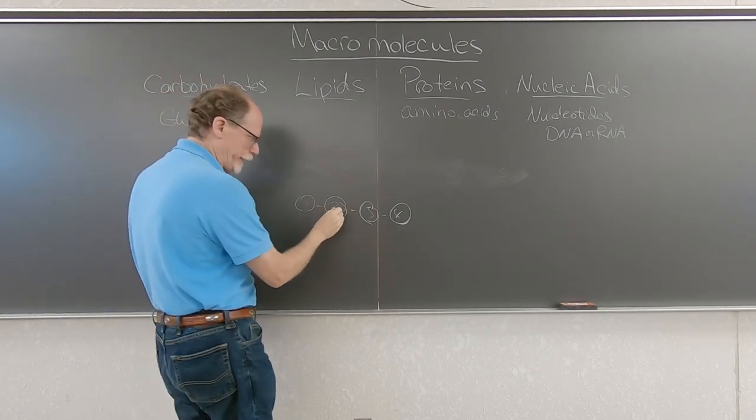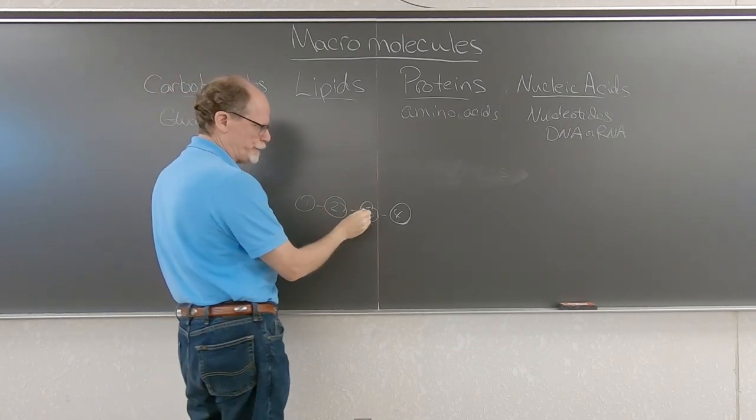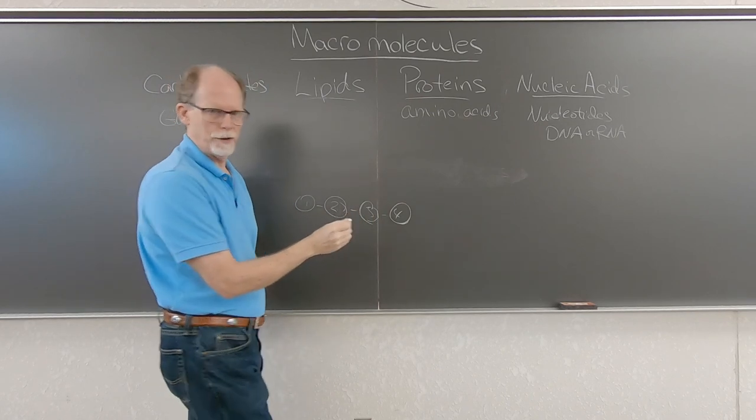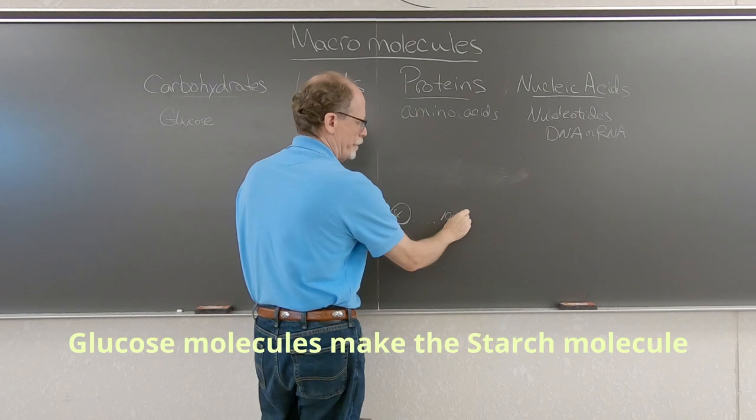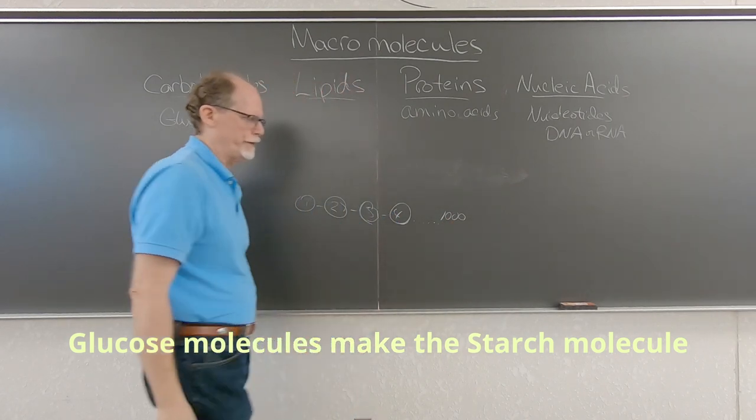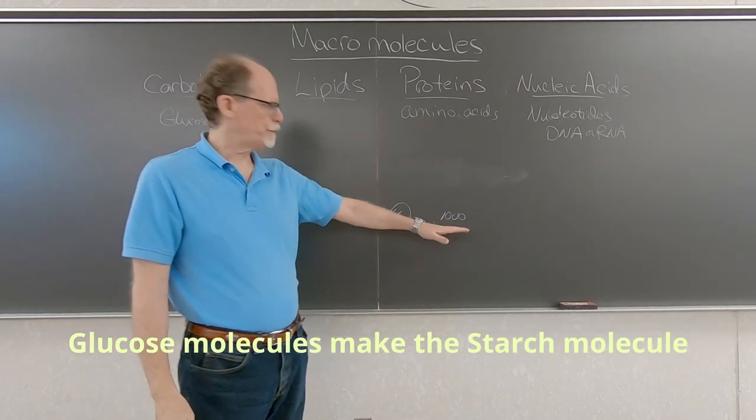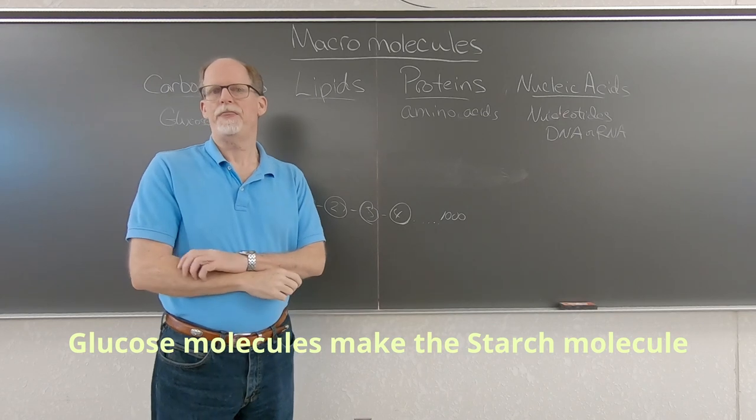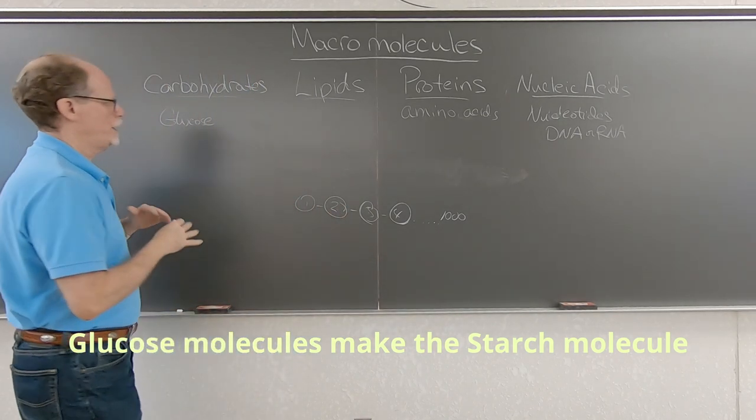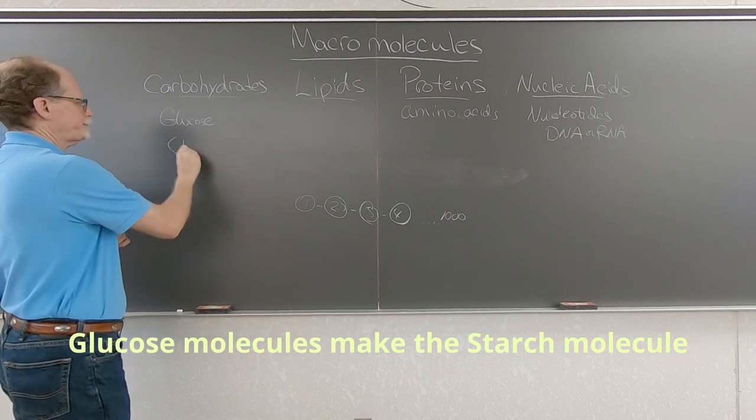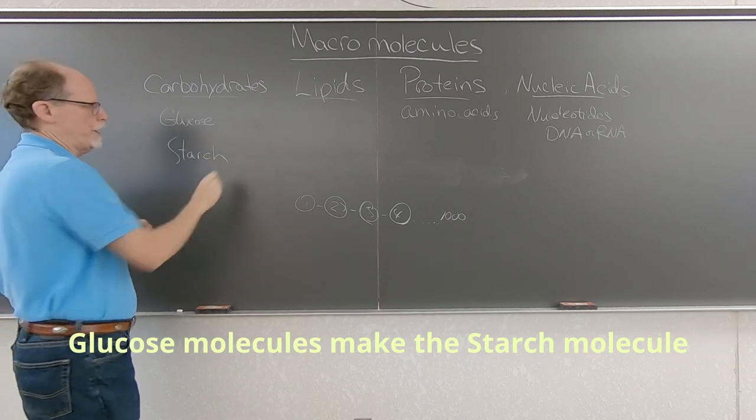So that means number one is glucose. It's linked to another molecule of glucose, which is linked to another molecule of glucose. And you can go on and if you're making starch, for instance, there are approximately a thousand glucose monomers linked together to make starch.